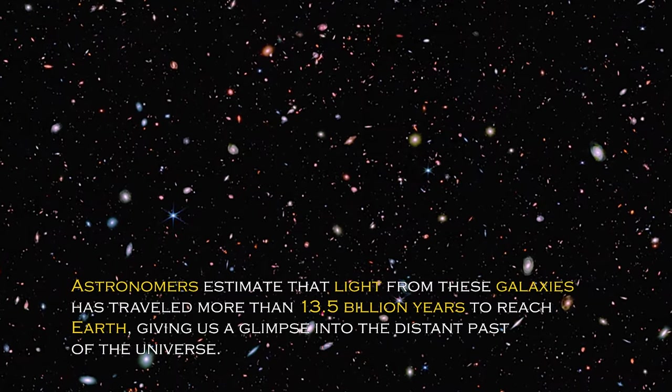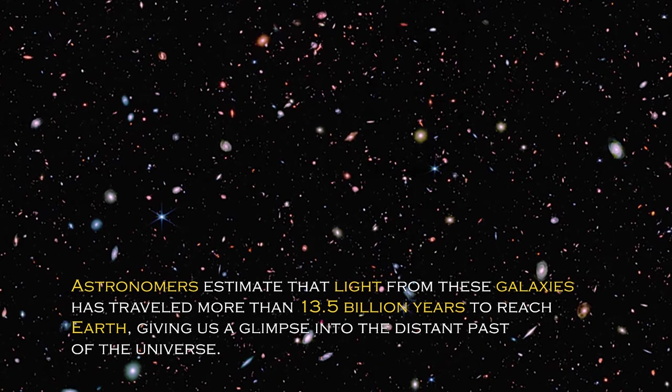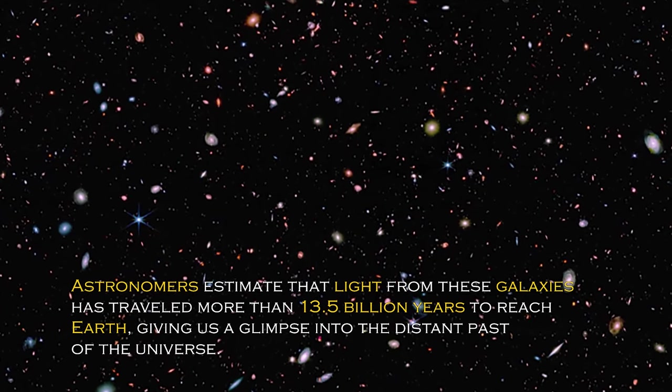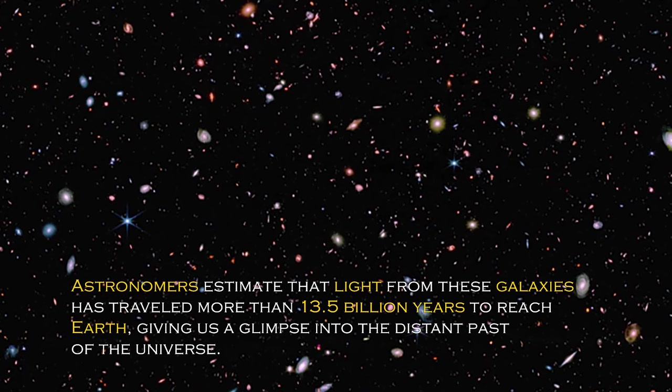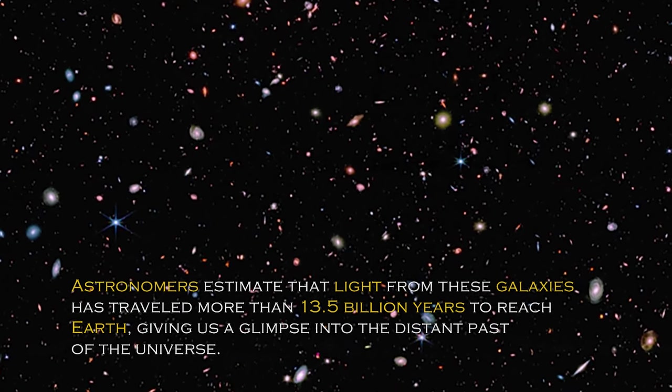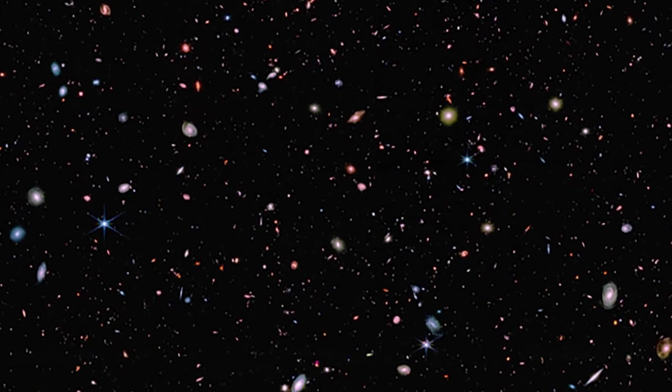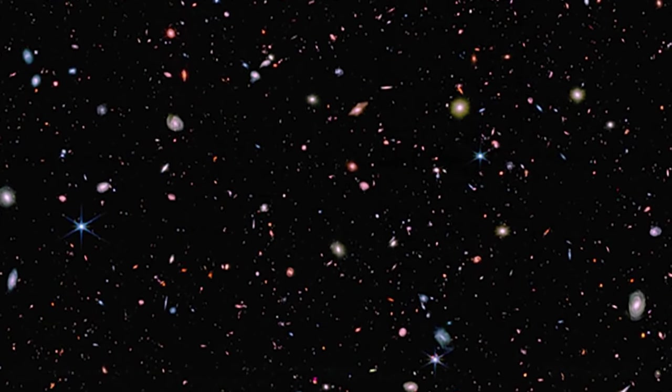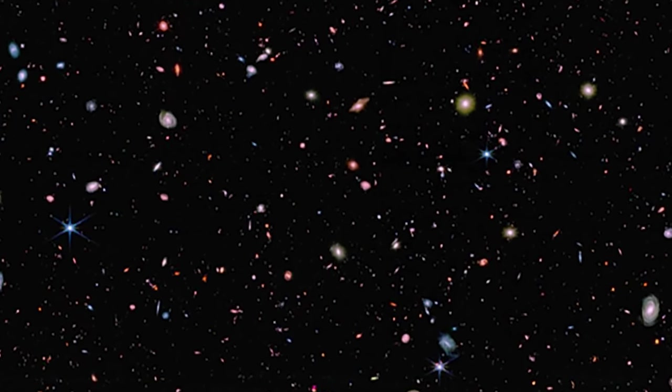Astronomers estimate that light from these galaxies has traveled more than 13.5 billion years to reach Earth, giving us a glimpse into the distant past of the universe. These galaxies were discovered when the universe was young, which sheds light on how quickly the first generations of galaxies emerged.